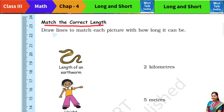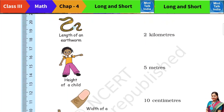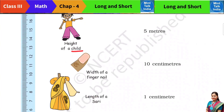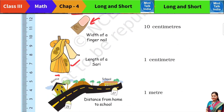Let us go to the next topic: match the correct length. Here you have to draw lines to match each picture with how long it can be — it is a guesswork activity. On the left side column, there is an earthworm, a small child, a fingernail, a mother with a sari, and the distance from your home to your school.